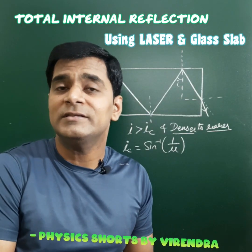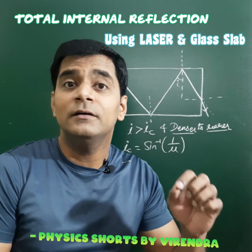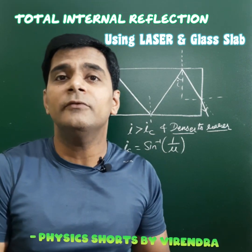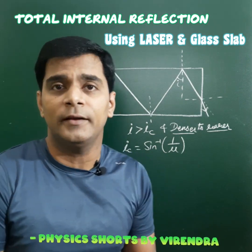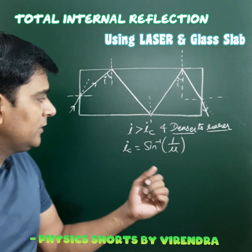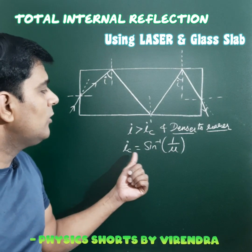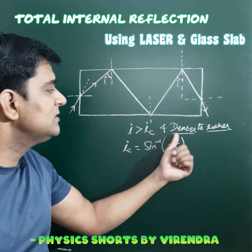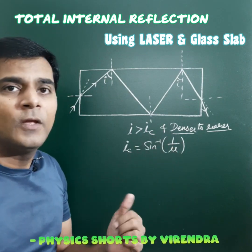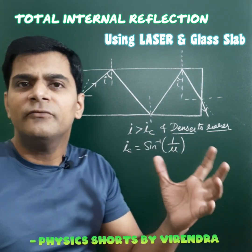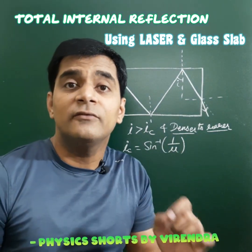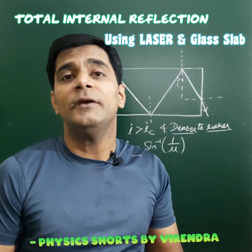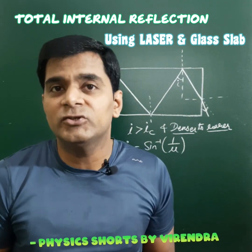If the angle of incidence at the denser medium interface is greater than the critical angle — where the critical angle is sine inverse of (1/μ), and μ is the refractive index — then it suffers total internal reflection.